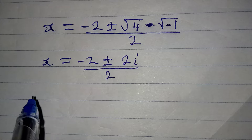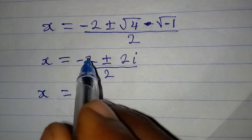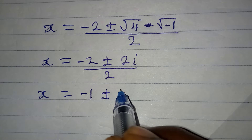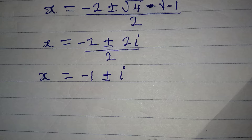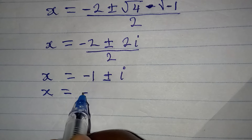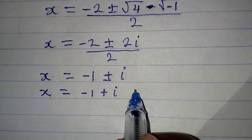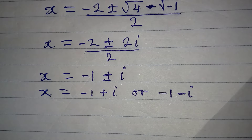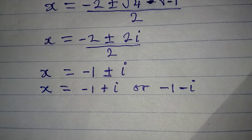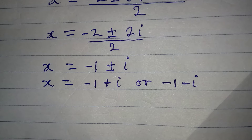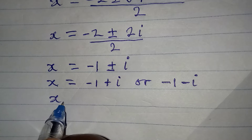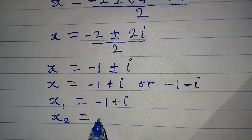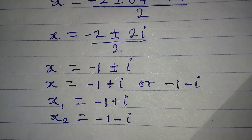Dividing through by 2, x equals negative 1 plus or minus i. This is a two-in-one solution: x equals minus 1 plus i, or x equals minus 1 minus i. These are the two solutions from the first quadratic equation. So x1 is minus 1 plus i and x2 is minus 1 minus i.